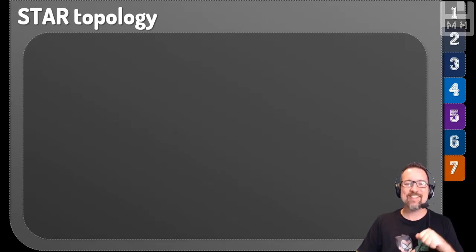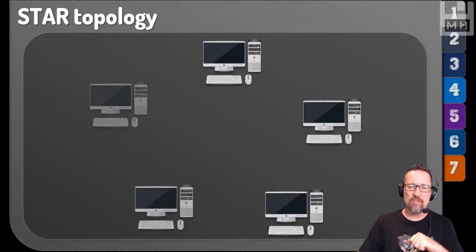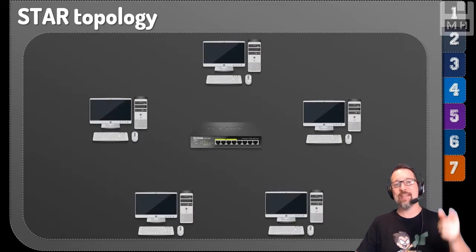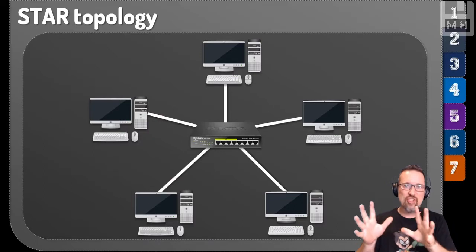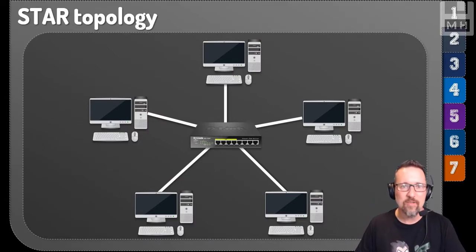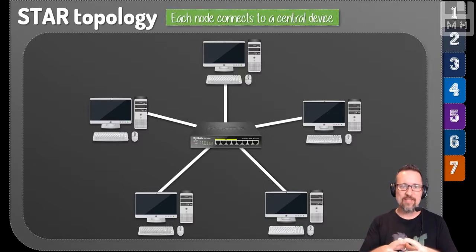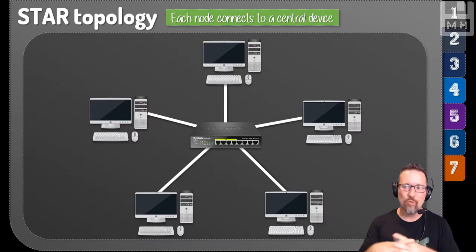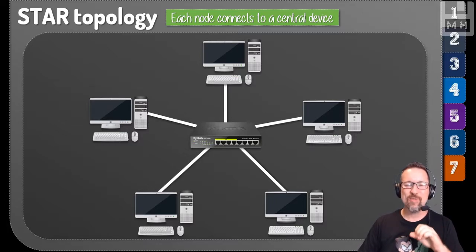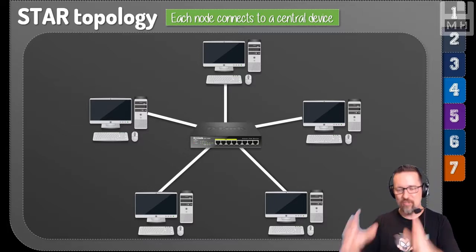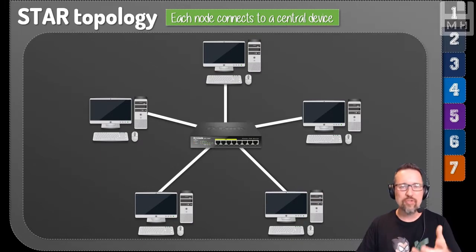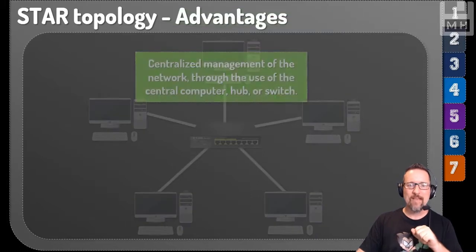Our first topology is the star topology. It's called star because everything is connected in a star shape. Every node — a node is what we call a connection point, so a computer would be a node — connects to a central device such as a server, switch, hub, or router. In this diagram you can see the main switch in the middle.